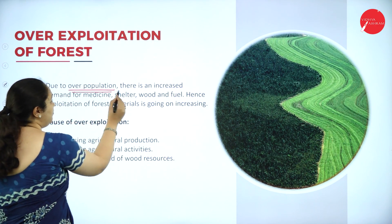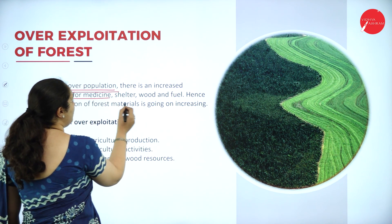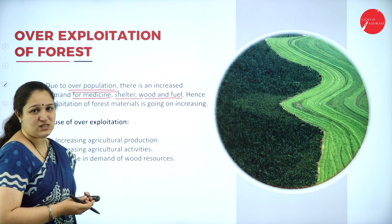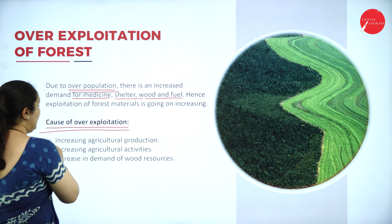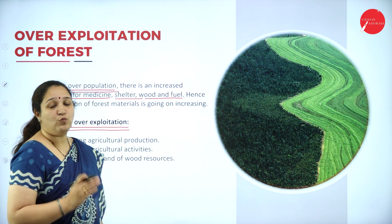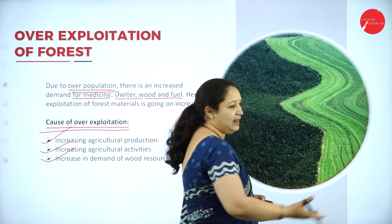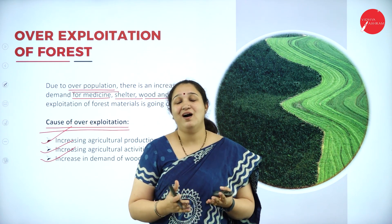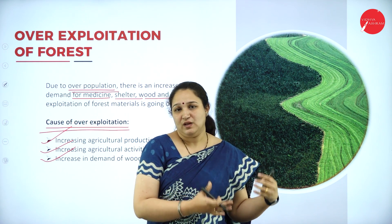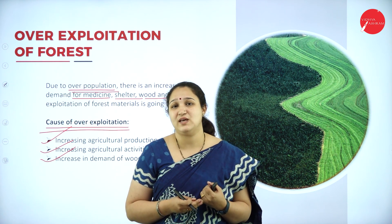Due to overpopulation, there is very high demand for medicine, shelter, wood, fuel, etc., and hence we are over-exploiting the forest resources. The causes for over-exploitation include increasing agricultural production, increasing agricultural activity, and increased demand for wood resources. We are converting all land covered by forest into agricultural land to support our population with food, and due to this over-exploitation all the forest ecosystem functions are getting spoiled.